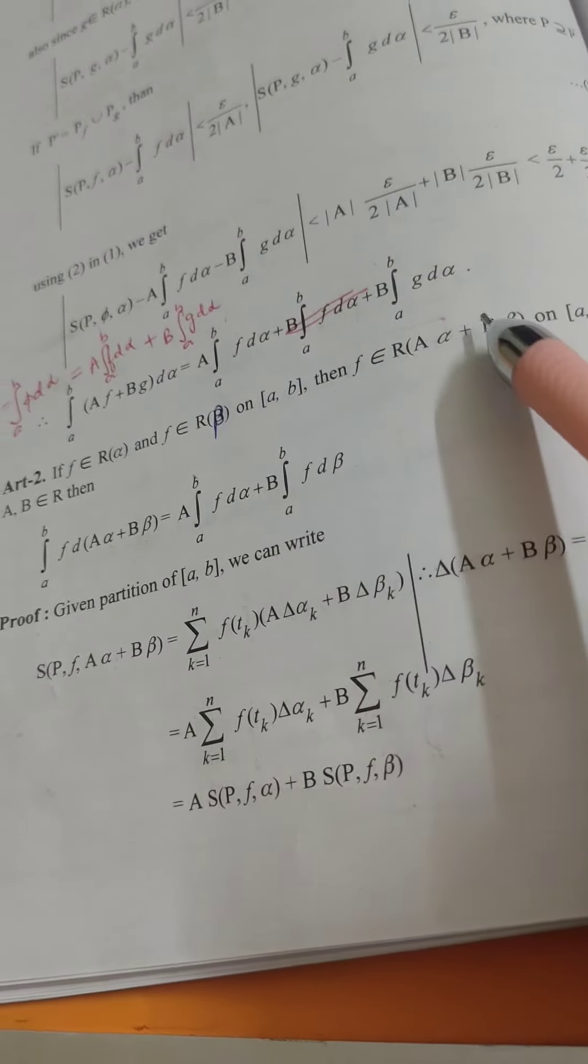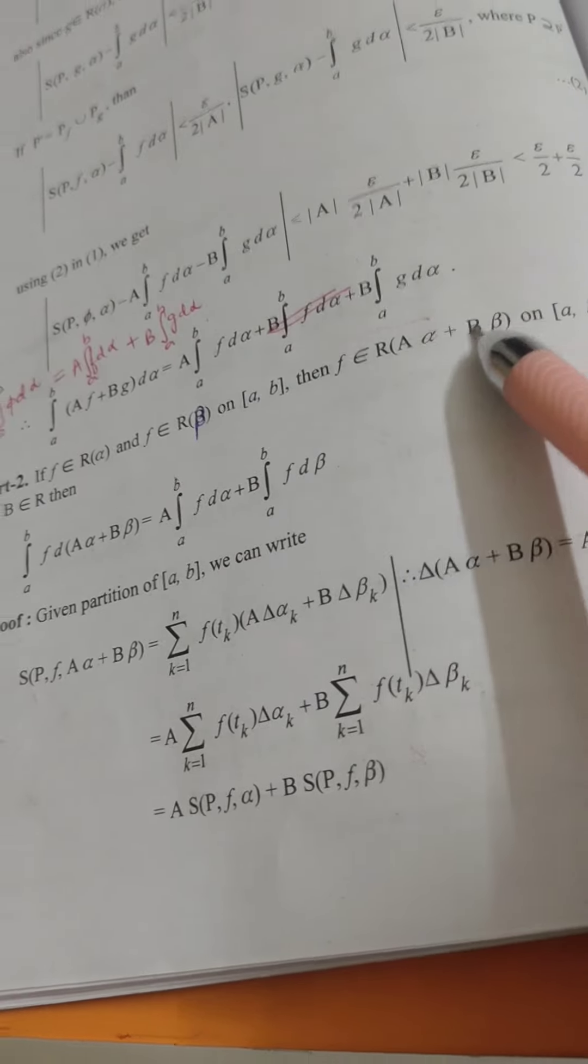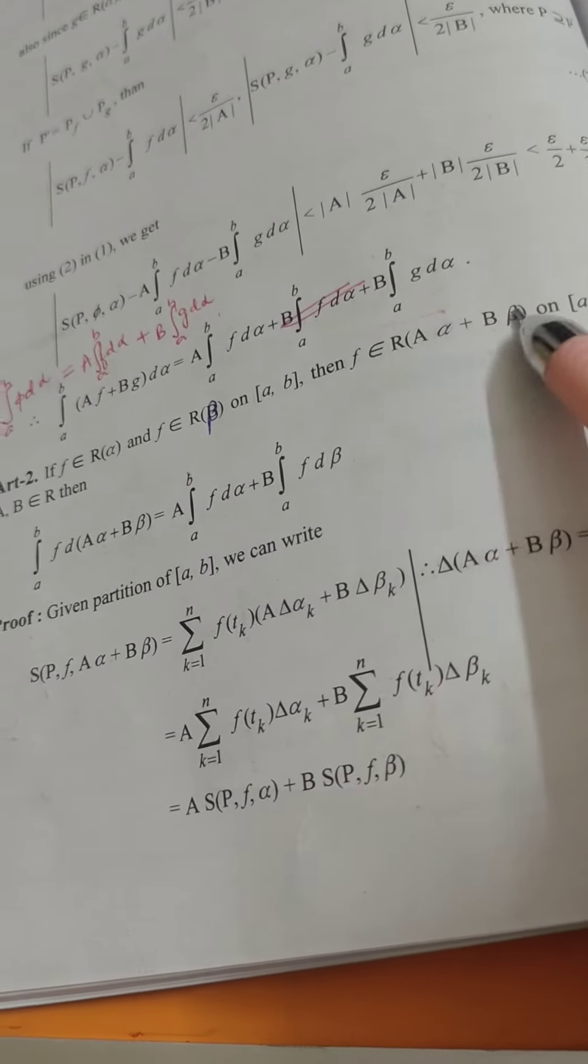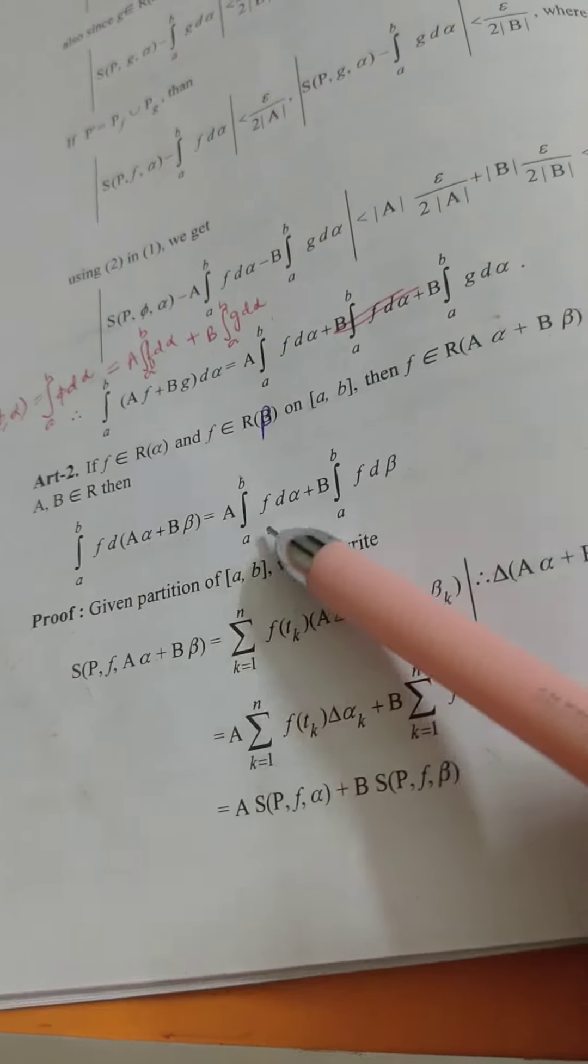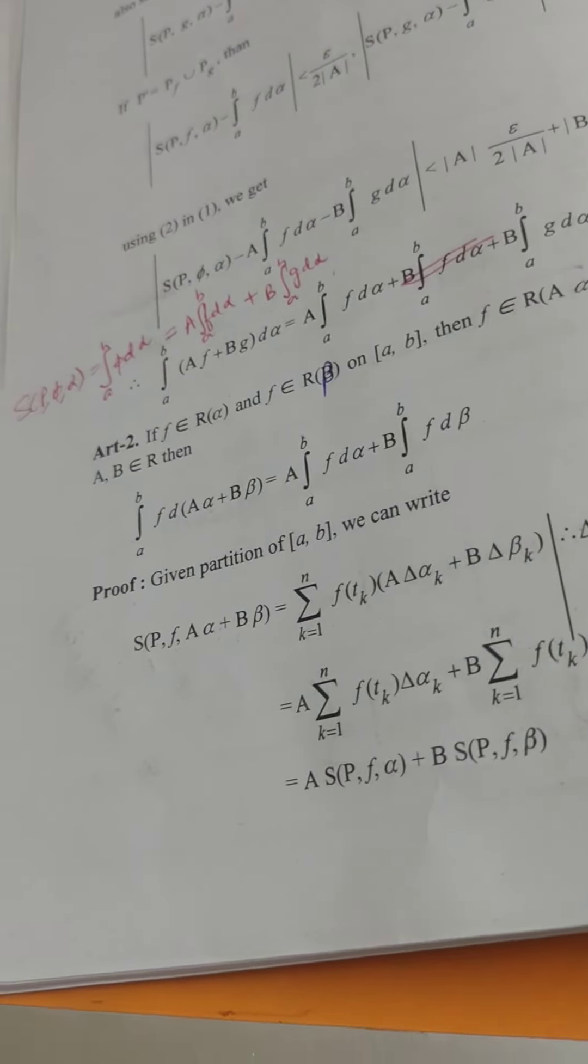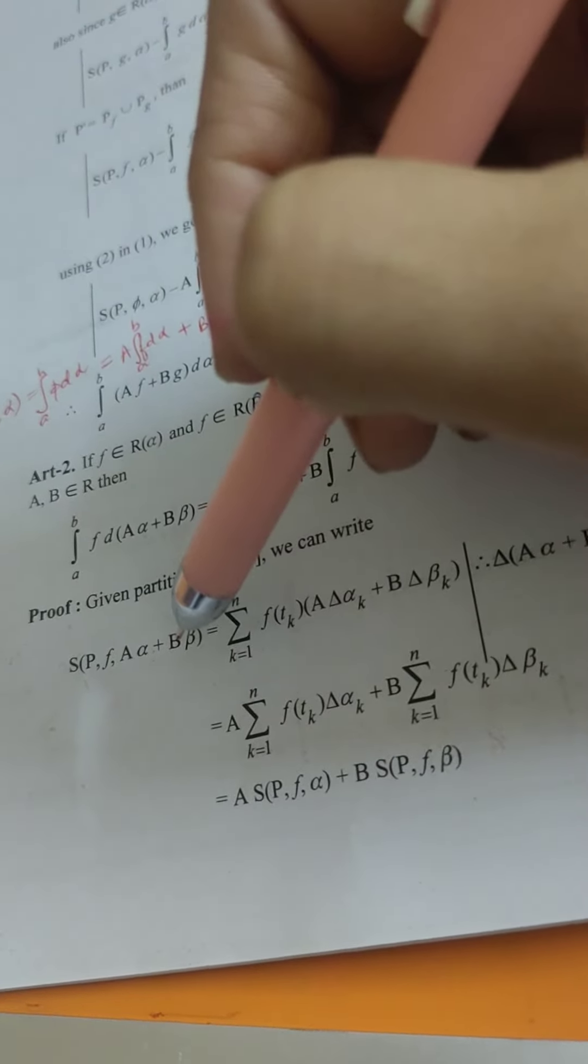Matlab is bar f ki jaga, hum jo humara function alpha hai us ki jaga change kar rahe hai. So alpha ki jaga humare paas do functions ka combination a alpha plus b beta. Result ka proof kaafi similar hai. Farak ye hai ki pehle f ki jaga change kar rahe the, ab yaha par alpha ki jaga change kar rahe hai.